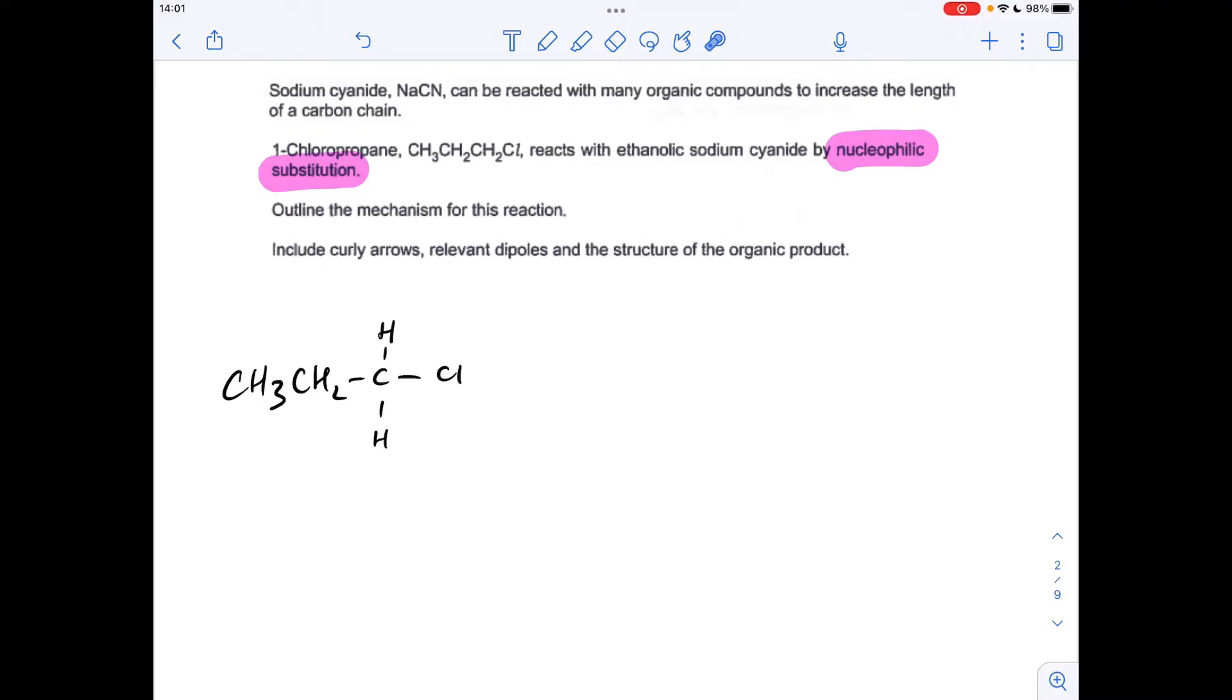So the reaction's between 1-chloropropane, which for the purpose of the mechanism, I've drawn like this, and it's written with ethanolic sodium cyanide. Now, the important part of the ethanolic sodium cyanide is the CN- ion, so I'll just draw that up now.